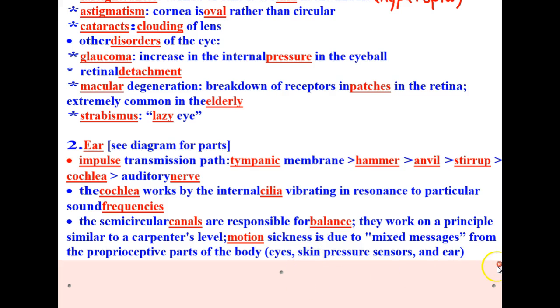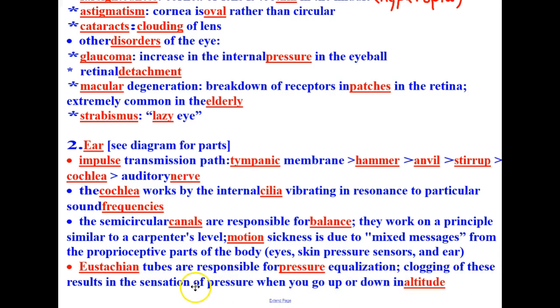Lastly, the eustachian tube is responsible for pressure equalization. Clogging of these tubes results in a sensation of pressure when you go up or down in altitude. Many of us have experienced our ears popping, for example.